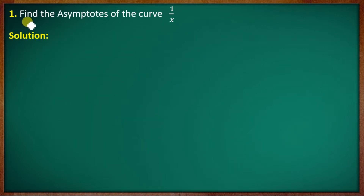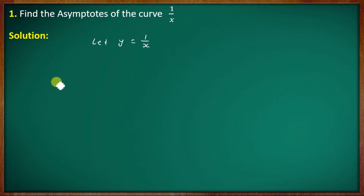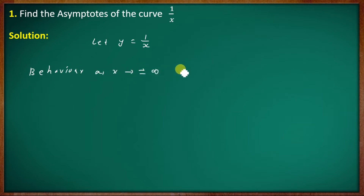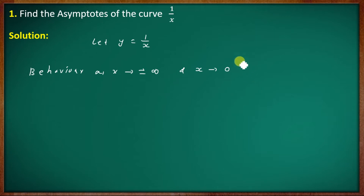First question: Find the asymptotes of the curve y equal to 1 by x.